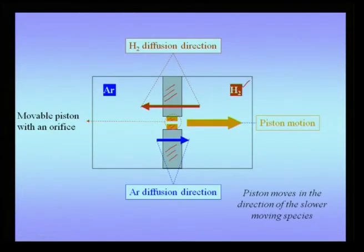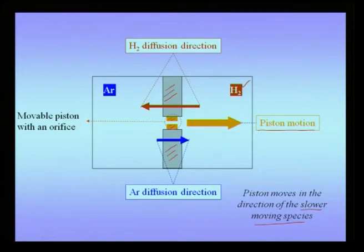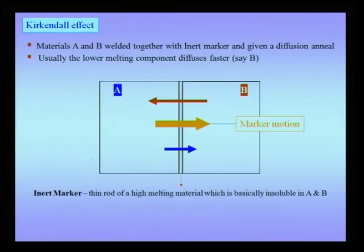What happens is that when a connection is made between these two sides of the chamber, argon will diffuse from the left to the right and hydrogen will tend to diffuse from the right to the left, but the rate of diffusion of hydrogen will be higher. Therefore the piston — the movable orange-colored piston — will move towards the right; in other words, it moves towards the slower diffusing species. You will notice that the volume of the left-hand chamber increases on the motion of the piston. This is an example which can have a solid state analog, and this solid state analog leads to an effect called the Kirkendall effect.